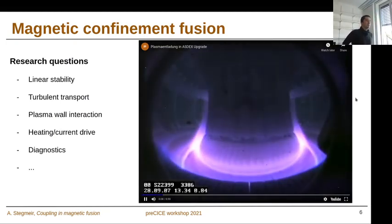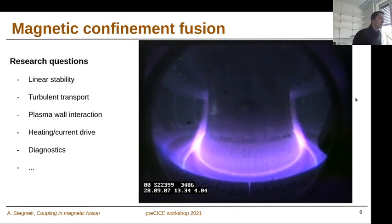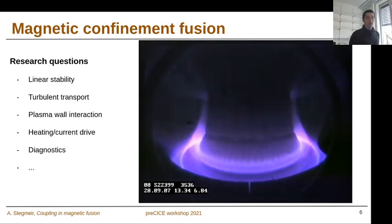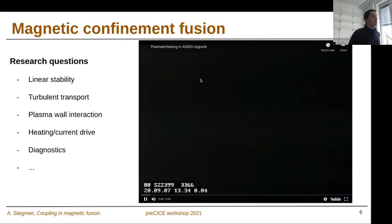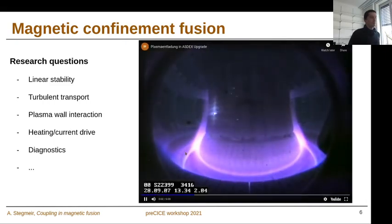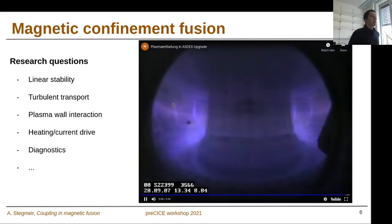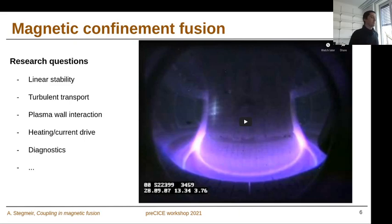Here you can see a discharge in a tokamak reactor of our reactor ASDEX Upgrade. You basically see only the outer part of the boundary region of the tokamak glowing here, whereas the actually hot region in the center does not emit light in the visible spectrum. The size of this reactor is roughly 1.65 meters in major radius and about 50 centimeters in minor radius.